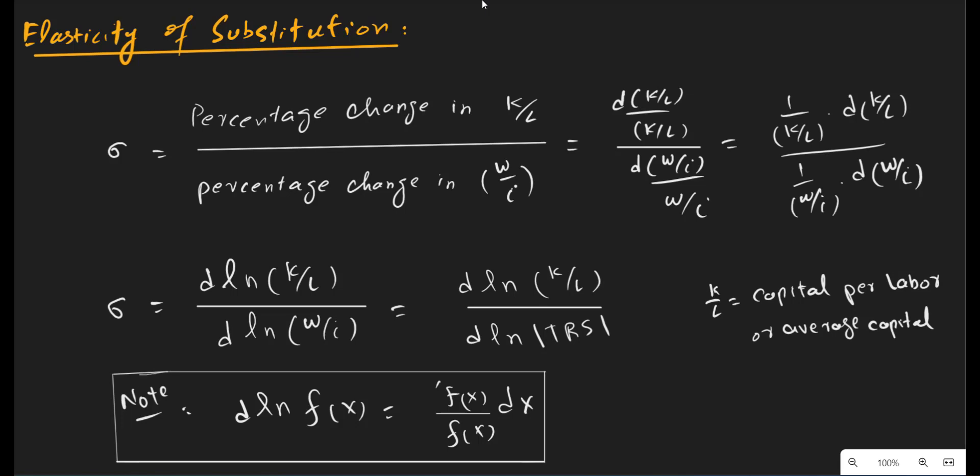The percentage change in the K/L ratio is calculated as the difference in the K/L ratio — that is, the current K/L minus the previous K/L — divided by the previous K/L. Similarly, the percentage change in input prices is obtained by the current input price ratio minus the previous input price ratio, divided by the previous input price ratio. So the numerator is the difference in K/L, the denominator is the difference in W/I, normalized by the initial K/L and initial W/I respectively.